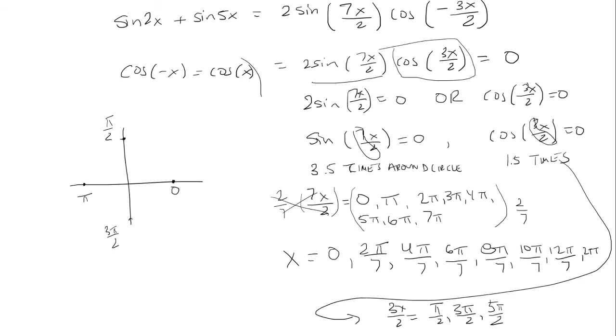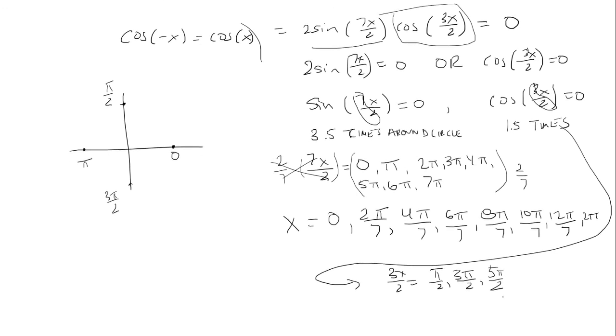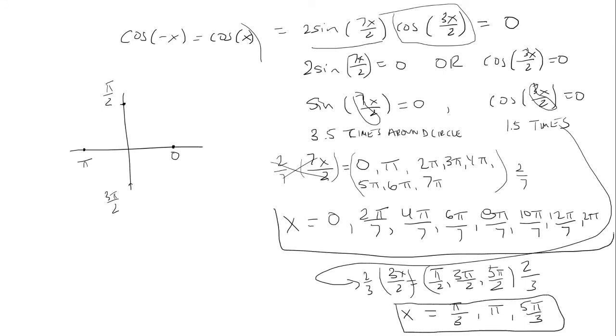And now we want to get x by itself so we have to multiply both sides by 2 thirds. We have x is equal to pi over 3, pi, and 5 pi over 3. So we're going to combine these answers along with these to get the answer to the original question.